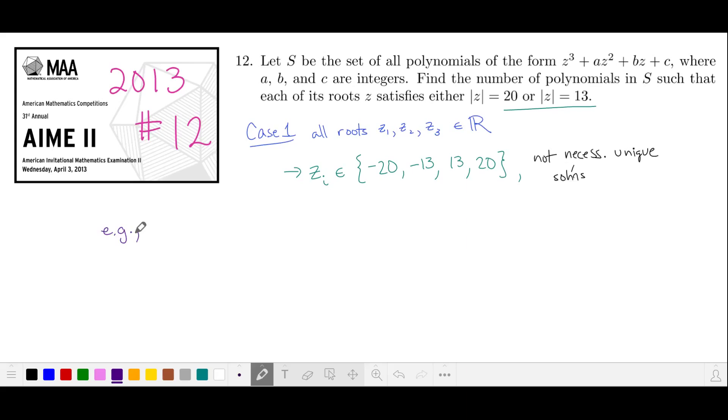And these are not necessarily unique solutions for each polynomial. So for example, one valid polynomial could have a double root in negative 20 and a third root that's 13. We'll count these up by first counting the number of polynomials that have three unique real roots from this set. That's four choose three.